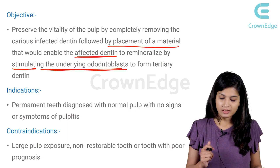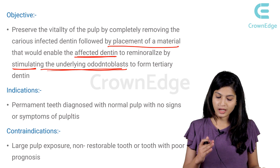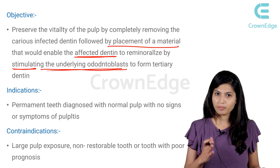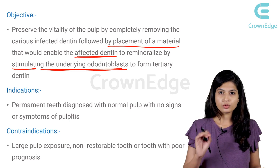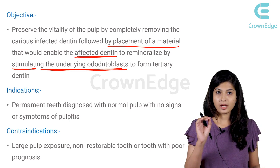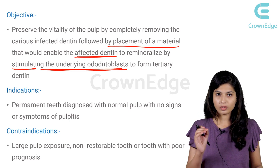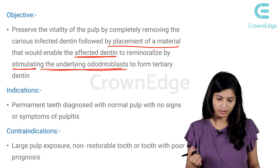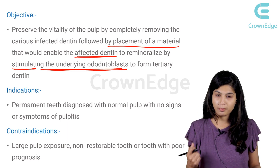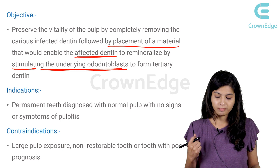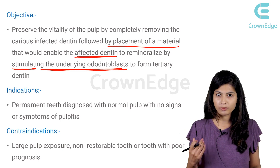The indications of indirect pulp capping: permanent teeth diagnosed with normal pulp and no signs or symptoms of pulpitis — where the caries is very close to the pulp, has not reached it, but radiographically appears about to reach the pulp. The contraindication is large pulpal exposures in a non-restorable tooth or a tooth with poor prognosis.